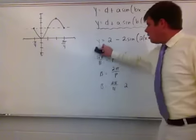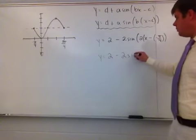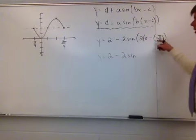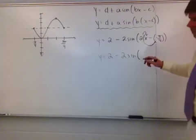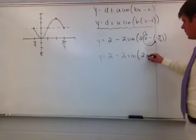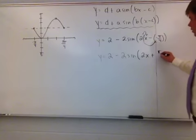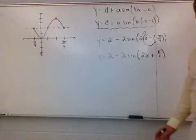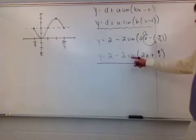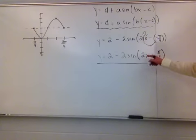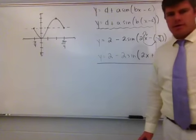Cleaning up the algebra, the function becomes y equals 2 minus 2·sine of the quantity 2x plus π/2. Inside the parentheses, distributing the 2 gives 2x, and a negative times a negative gives a positive, so 2 times π/4 is π/2. The final equation is y equals 2 minus 2·sine(2x + π/2). I hope that helps with your homework when deciphering how to do these problems.